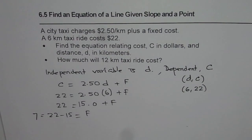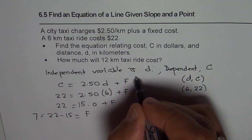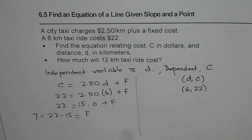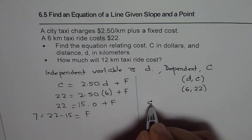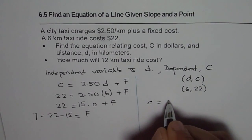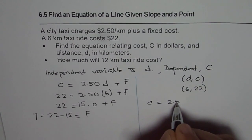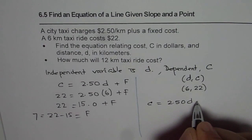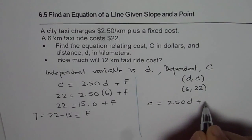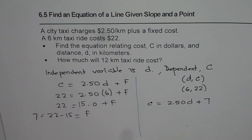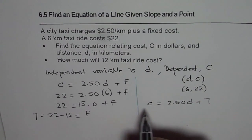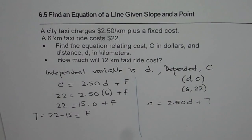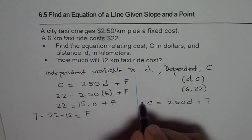Since we now know that F is 7, we can write down our equation. C equals 2.50D plus 7. That becomes the equation for part A.